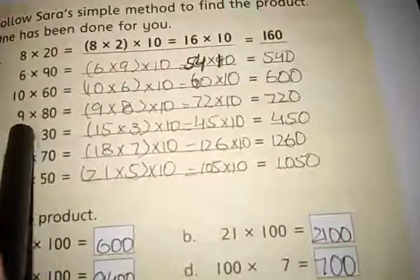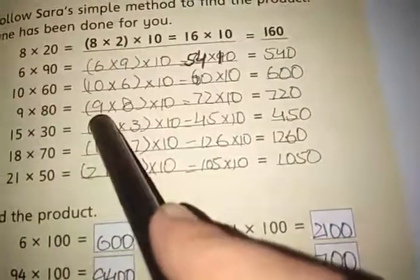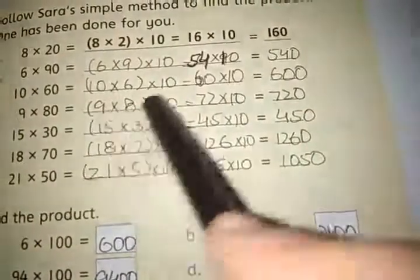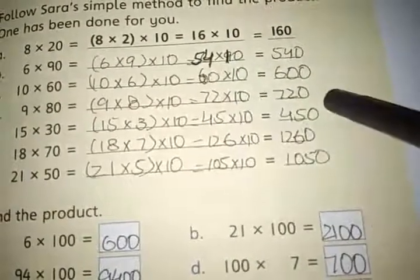Now, number D is 9 multiplied by 80. First 9 multiplied by 8. 9 eights are 72. Then 72 multiplied by 10 is equal to 720.